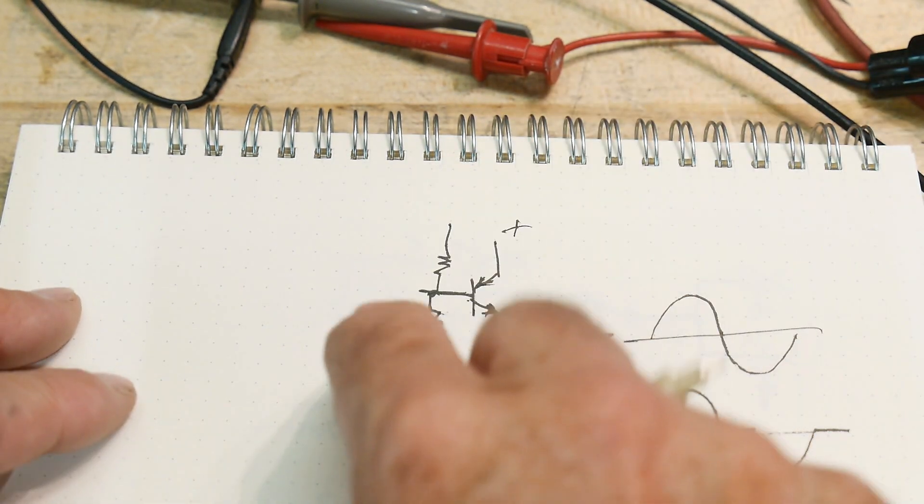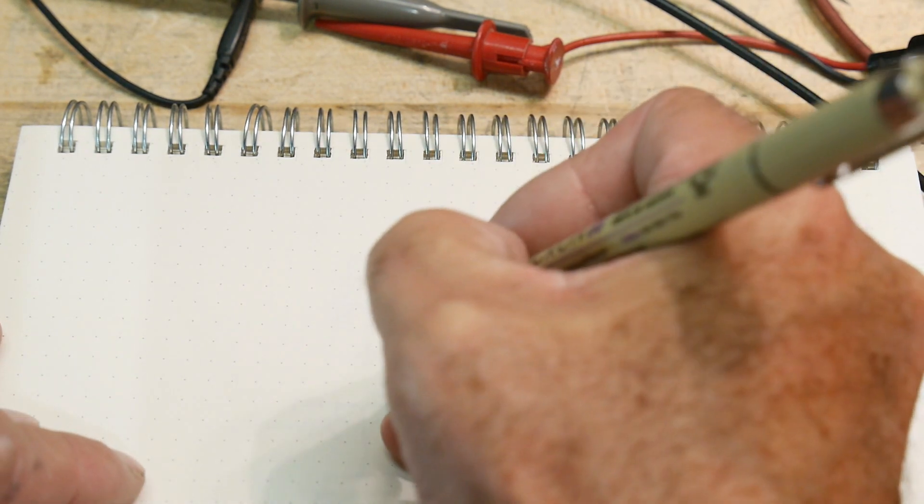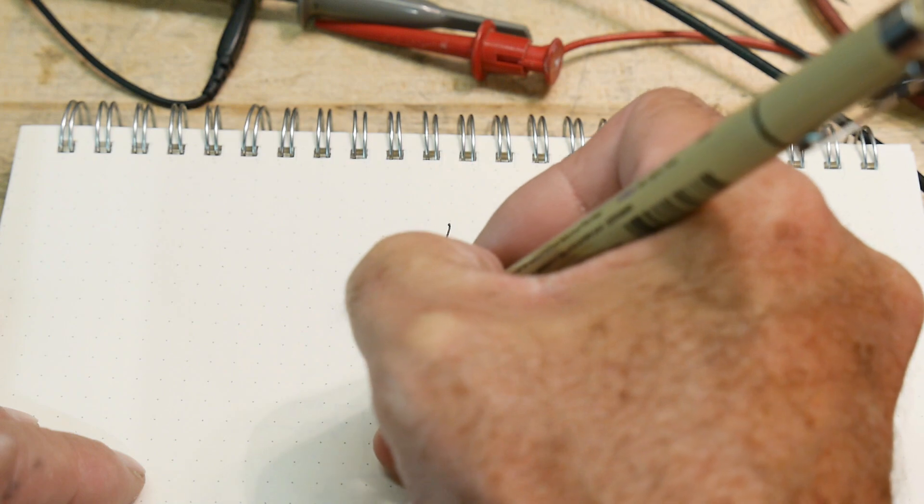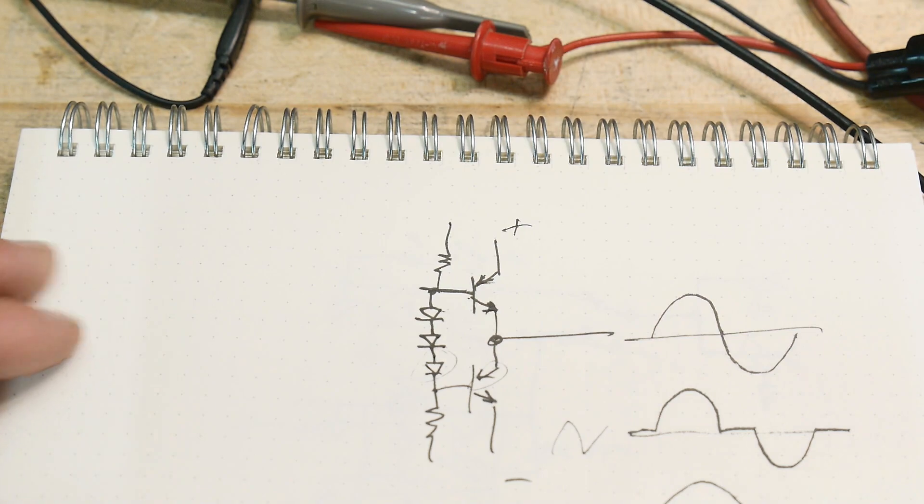So a good thing to do is to have a resistor here that you can change, and you can balance and everything. What some circuits do is just put in a third diode, and they say maybe that's close enough.